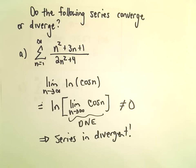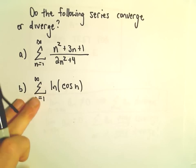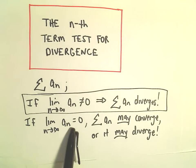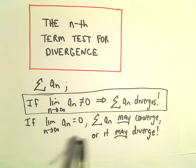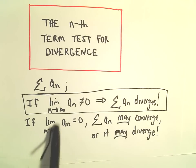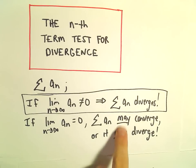Integral test, direct comparison, limit comparison, ratio test, root test. There will be all these other different tests to try if the limit is zero. So if the limit's not zero, again, it diverges, you're done. If the limit is zero, it's going to be a little bit more labor intensive because you're going to have to figure out a way to address the question.